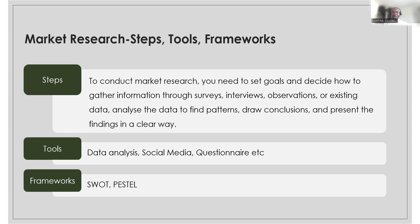What are the various steps, tools, and frameworks a BA needs to conduct market research? For the steps to conduct market research: you need to set goals, decide how to gather market information through surveys, interviews, observations, or existing data, analyze data to find patterns, draw conclusions, and present findings in a clear way.